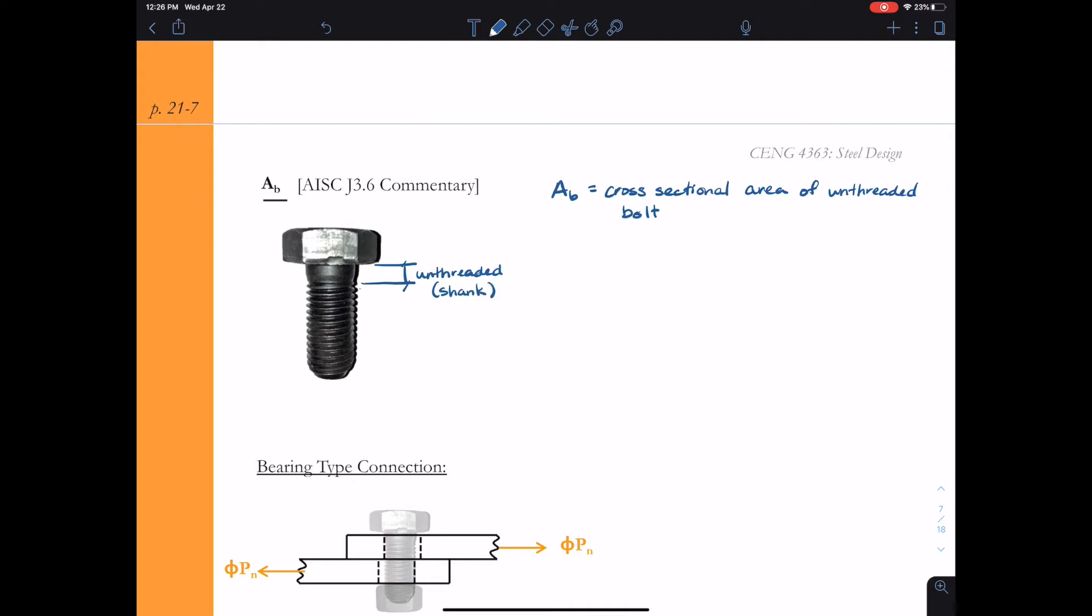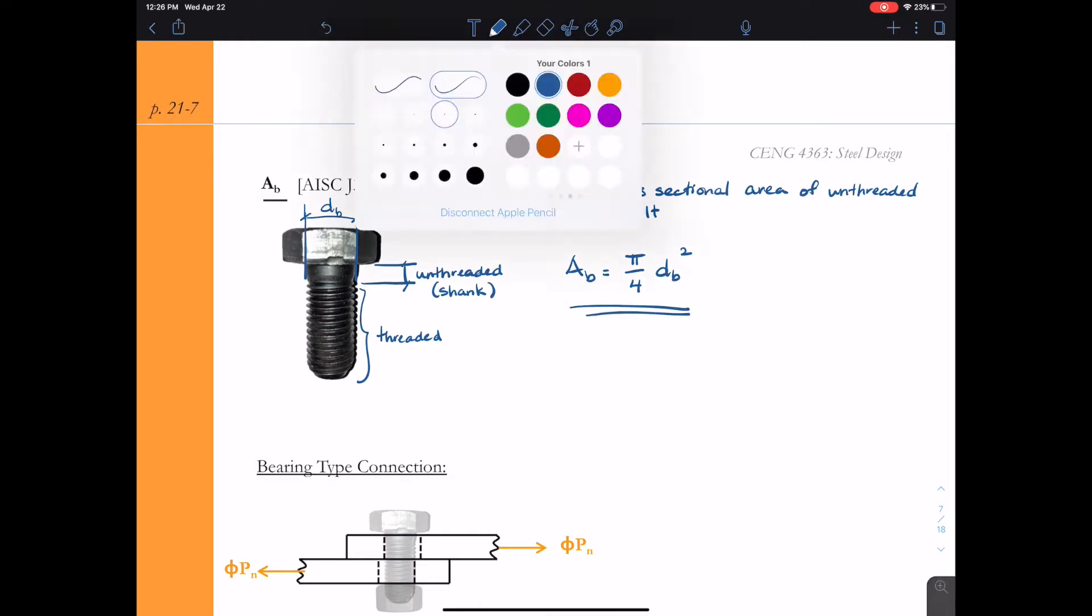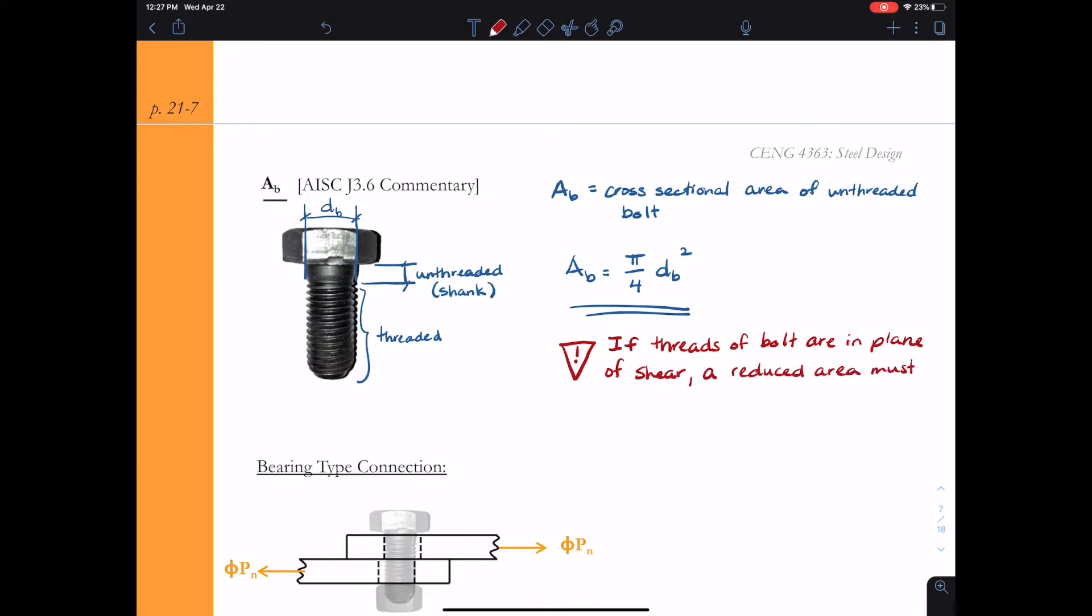And then we have the threaded portion, which is everything else, the rest of the bolt. When we're looking at the cross sectional area, if we just use pi over four times the diameter of the bolt, that's going to give us the cross sectional area of the unthreaded bolt. When we define a bolt as three quarter inch diameter, we're talking about the unthreaded portion is three quarter inch in diameter. So that makes a difference—if our failure is occurring in the shank of the bolt or in the threaded portion of the bolt, it makes a huge difference on the capacity in shear as well as in tension. I'm going to make sure I add a big warning sign here: if the threads of the bolt are in the plane of the shear, you must use the reduced area.